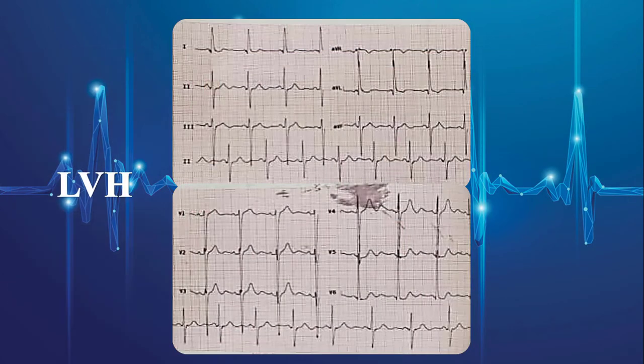The next EKG demonstrates LVH. As we expect, there are discordant ST depressions in lateral leads due to underlying left ventricular hypertrophy.